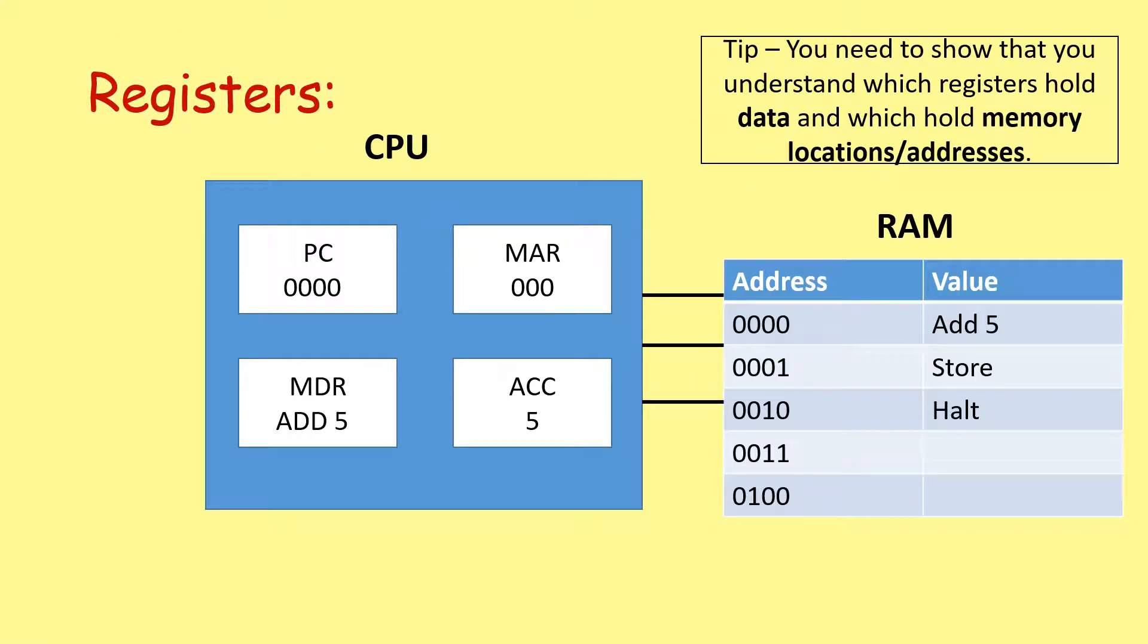So understanding all these registers can be really difficult. It's very important for the OCR J277 exam that you understand which registers hold data and which hold memory locations slash addresses. So here we've got a very simplified version of a CPU. In this CPU, we've got some registers: the program counter, the memory address register, the MDR, and the accumulator. And over here, we've got our main memory, our RAM. And we've got a very simple program running. It's just going to say add 5, store in memory, stop the program. And these are held at different memory locations in binary. So we've got memory locations 0, 1, 2, 3, and so on and so forth.